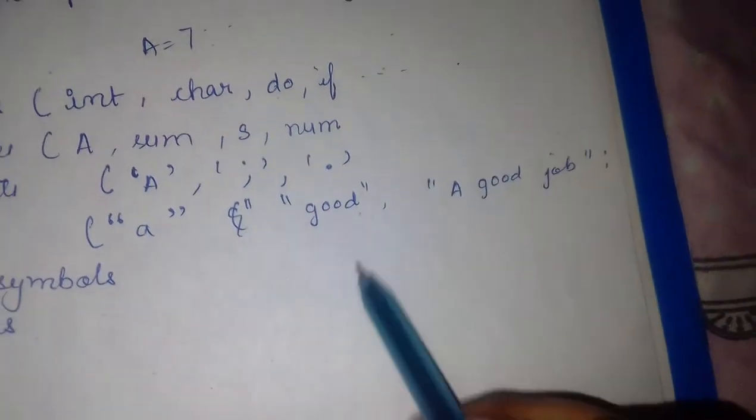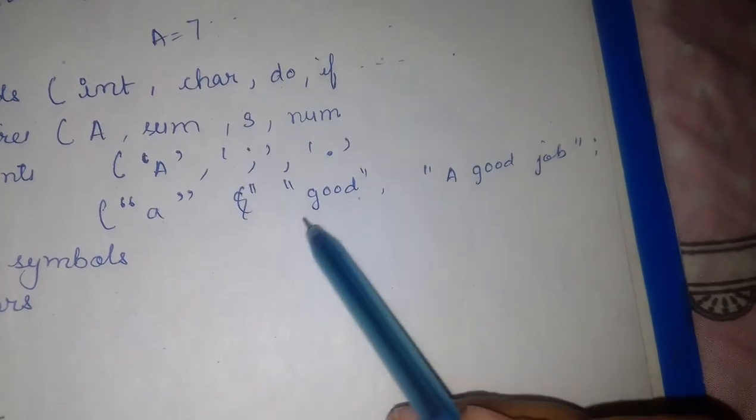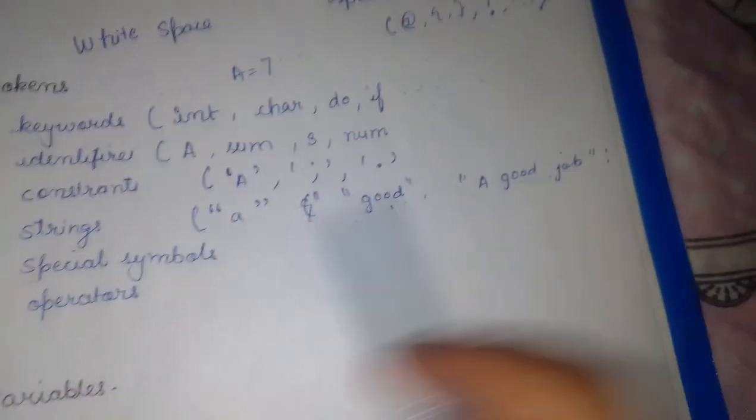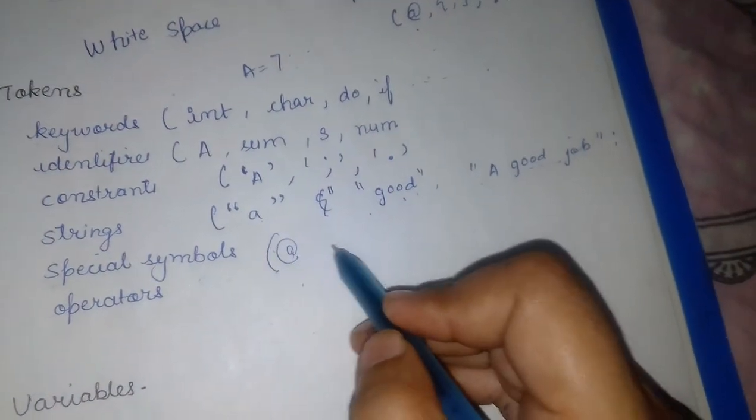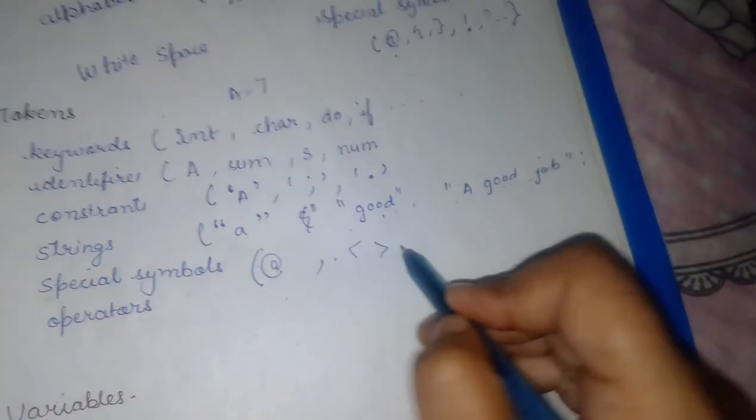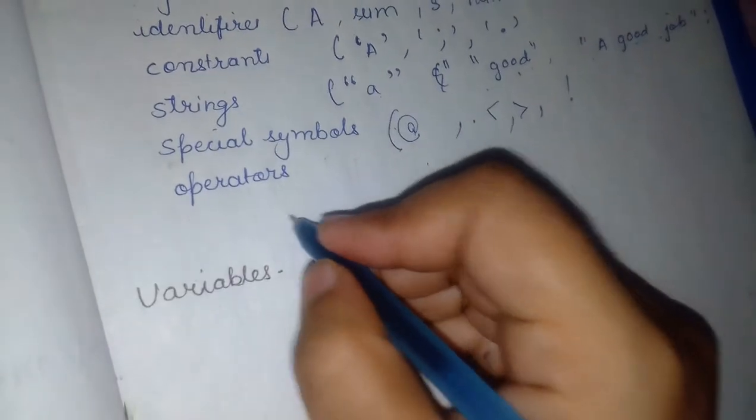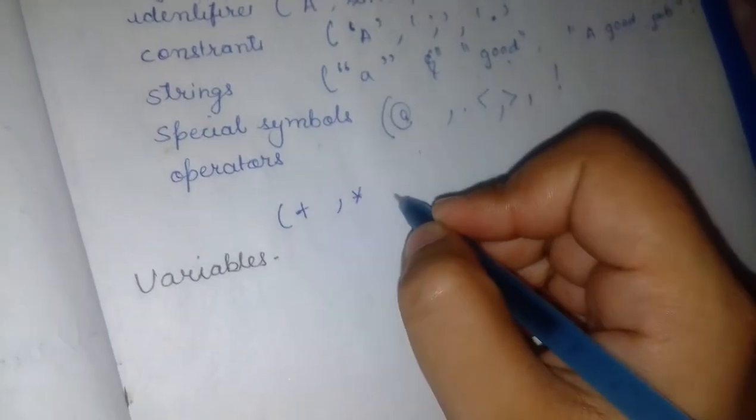Then we have special symbols that I already defined here. Any symbol is called a special symbol. If we talk about operators, which are for operations in programs: plus for addition, asterisk for multiplication, equals to, modulo division, etc.